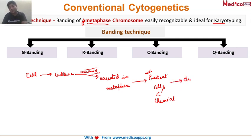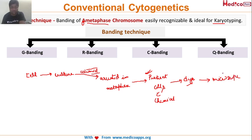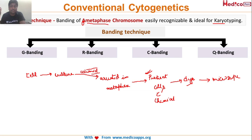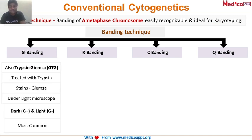The pre-treatment chemical is very important because the different chemical used will determine what kind of dye the chromosome picks up. Once pre-treated, we apply a dye, and then look at the chromosomes under a microscope — either a simple light microscope or a fluorescent microscope. So the steps are: culture the cell, arrest it in metaphase, pre-treat with chemical, apply dye, then view under microscope.